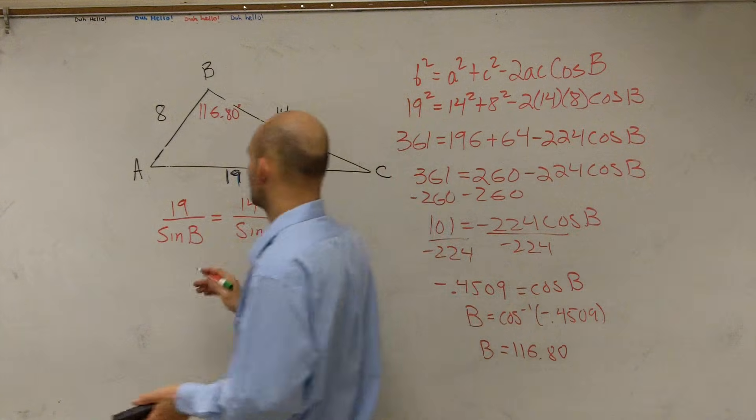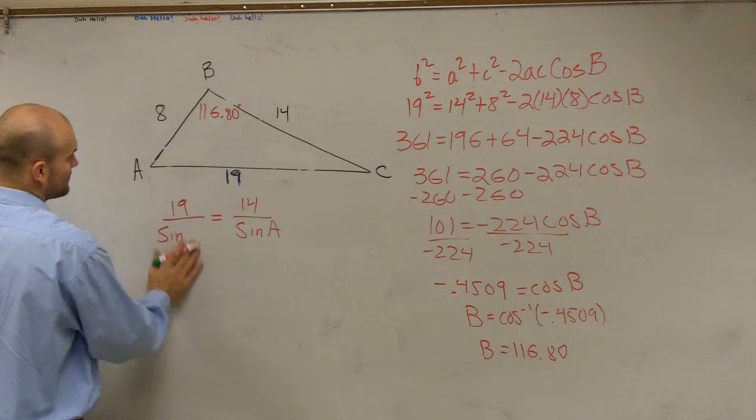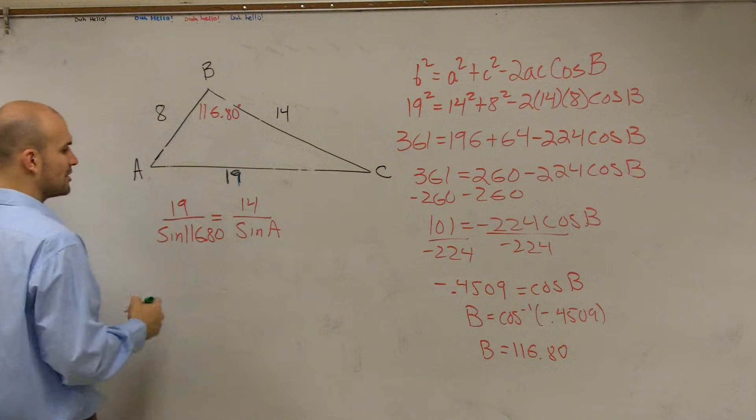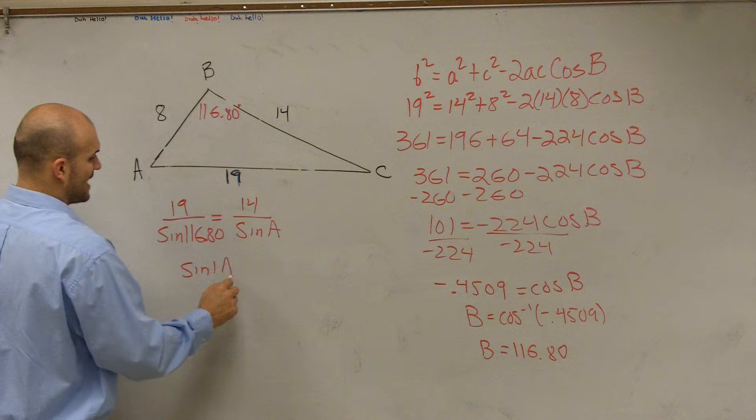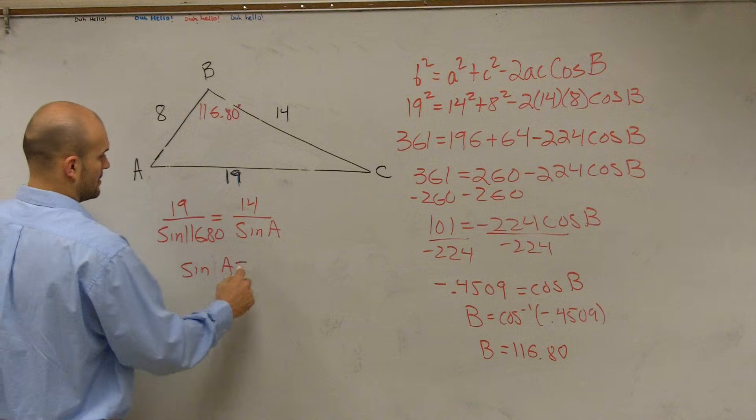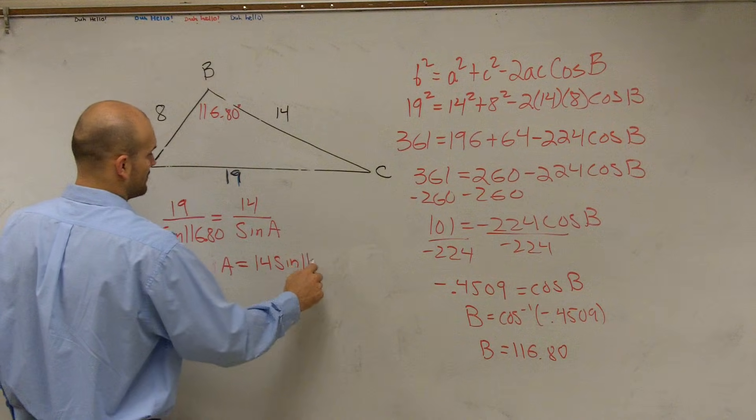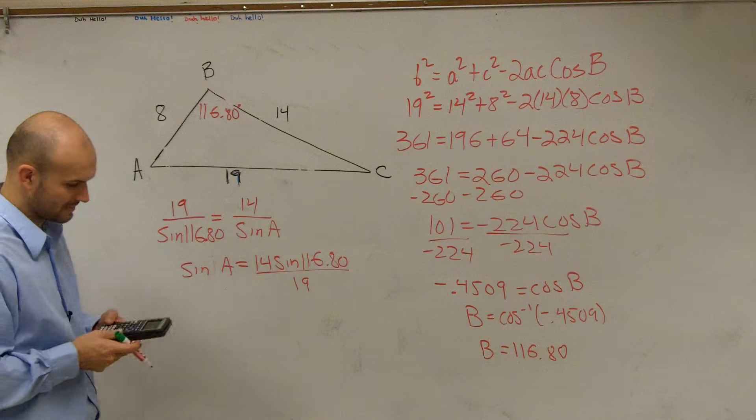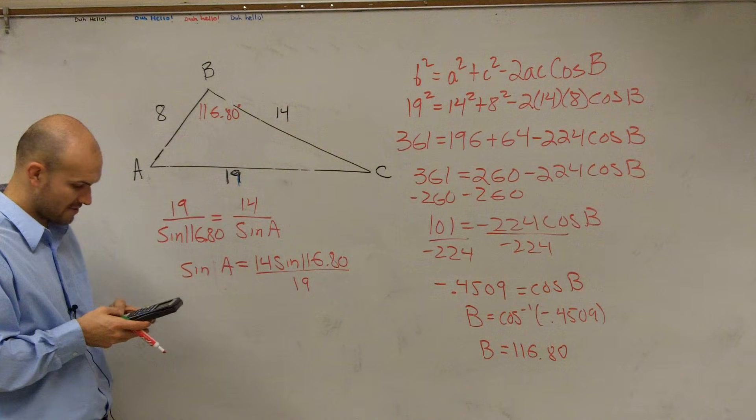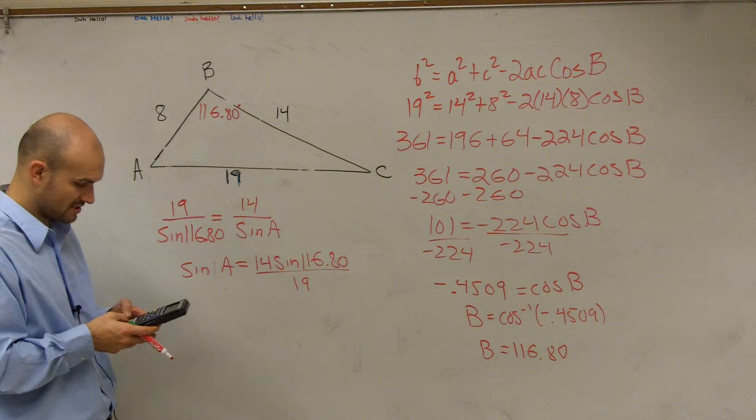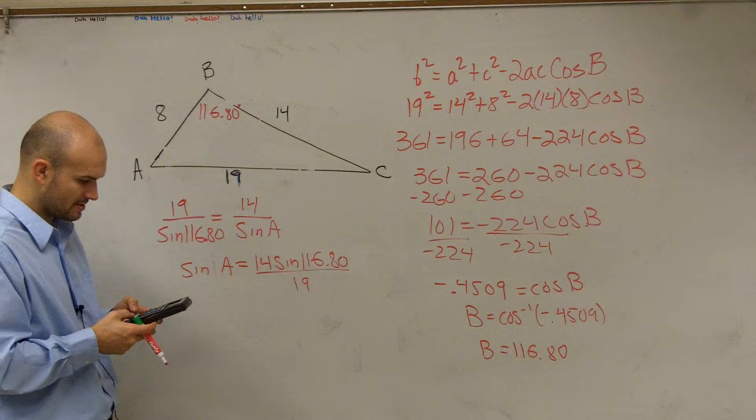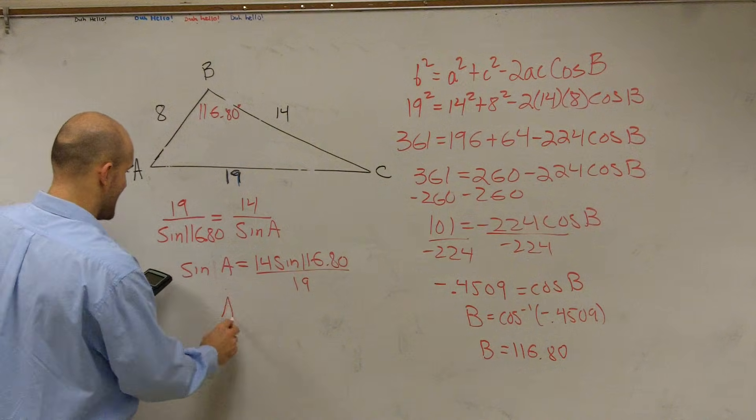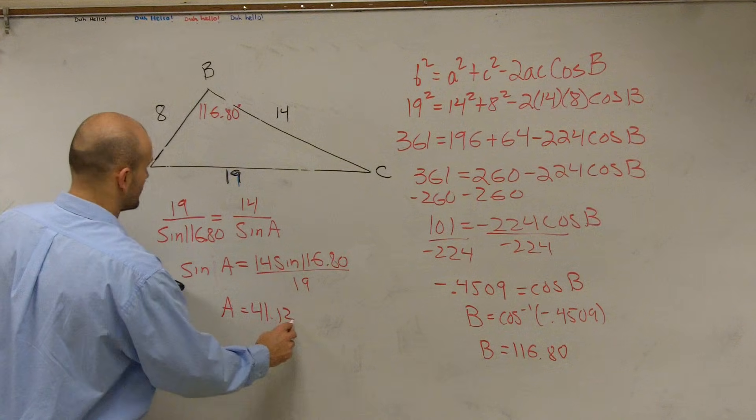All right, so now when solving for B is now 19. All right, so our B is 116.80. So now by using my cross multiplication, I could say the sine of A is equal to 14 times the sine of 116.80 all divided by 19. So let's plug this in our calculator. So we have 14 times the sine of 116.80 and then divided by 19 and then the inverse sine. So now we could say A equals 41.12.